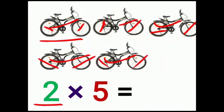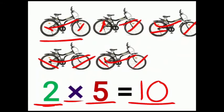2 wheels, 5 cycles. 2×5 is equal to 10. 2 fives are 10. 10 wheels.